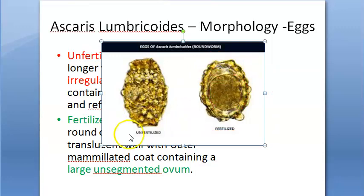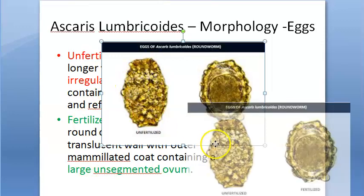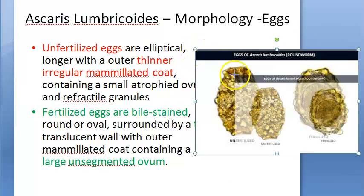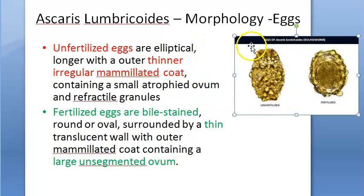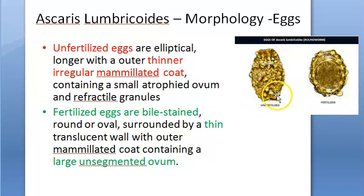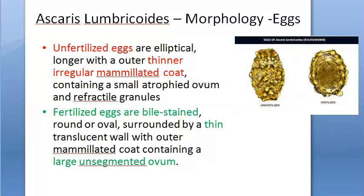The unfertilized egg has a thinner, irregular mammillated coat and an atrophied ovum since it is not fertilized. It is elliptical and longer. The fertilized eggs are bile-stained. These are the key morphological distinctions between fertilized and unfertilized eggs.